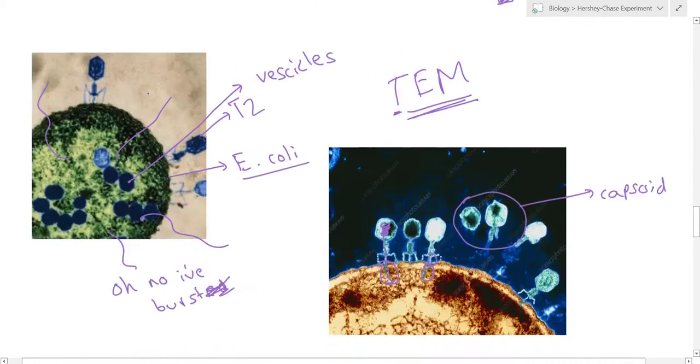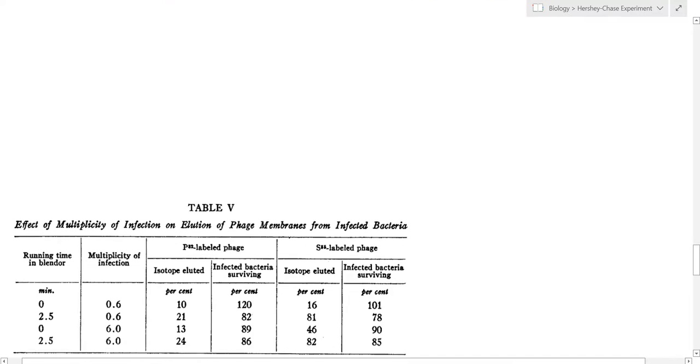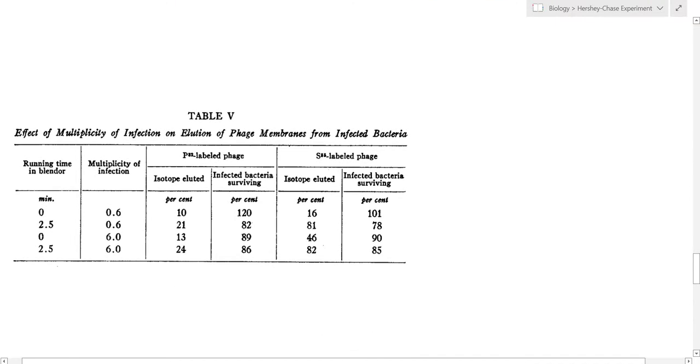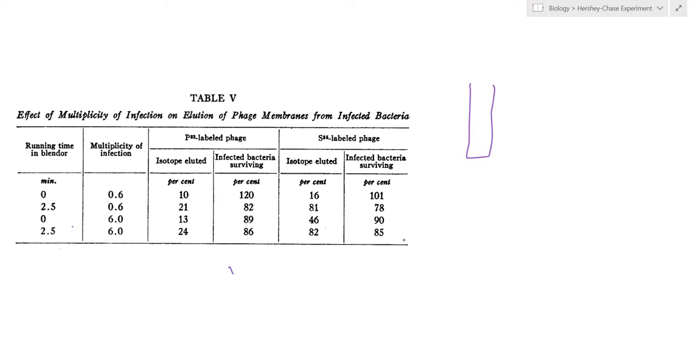And I actually pulled the original table from the paper. However, this table basically shows how much of the isotope they found inside the supernatant of the two solutions. That is for the sulfur and phosphorus mixtures, how much of the isotope ended up in the supernatant and how much ended up in the pellet.